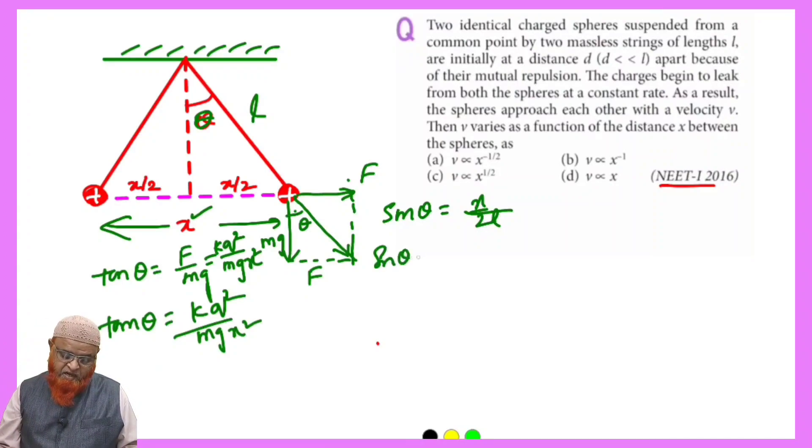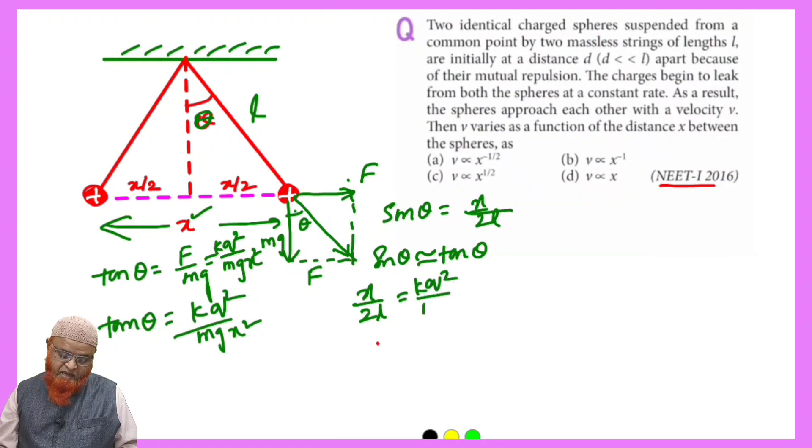For small angles we can consider sin theta approximately equal to tan theta. So we can also write this as x by 2l is equal to kq² by mgx².